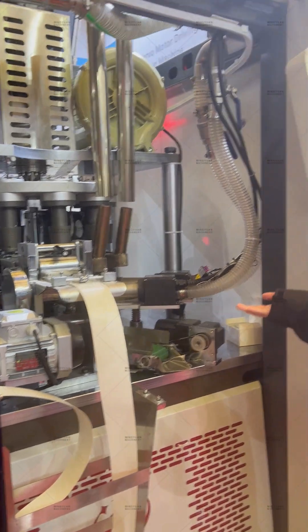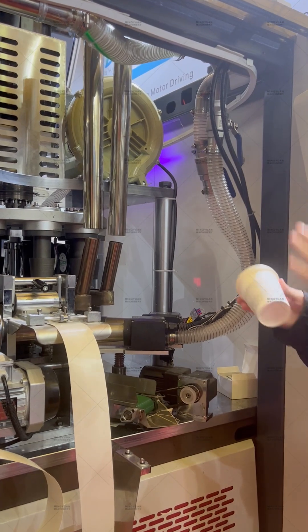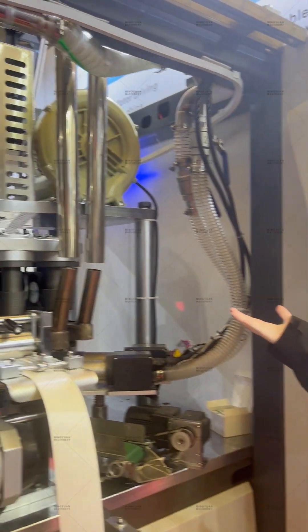You will see five hot air guns. Its function is to heat temperature very quickly. So it can melt PE very quickly. That's why our speed is very fast.